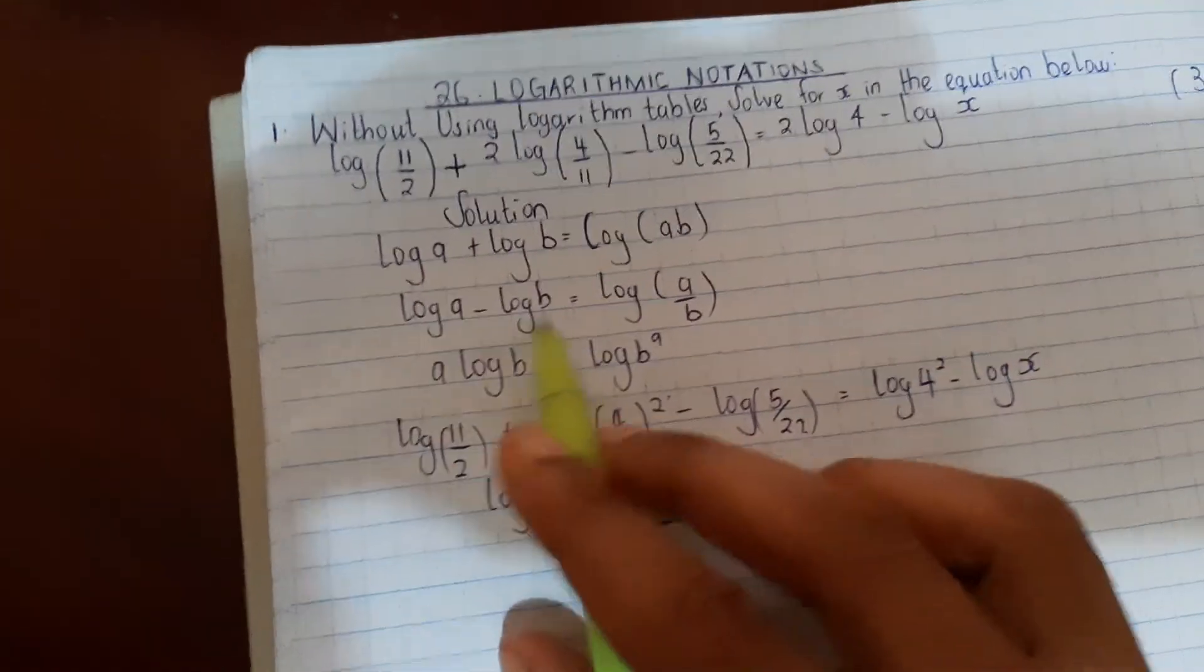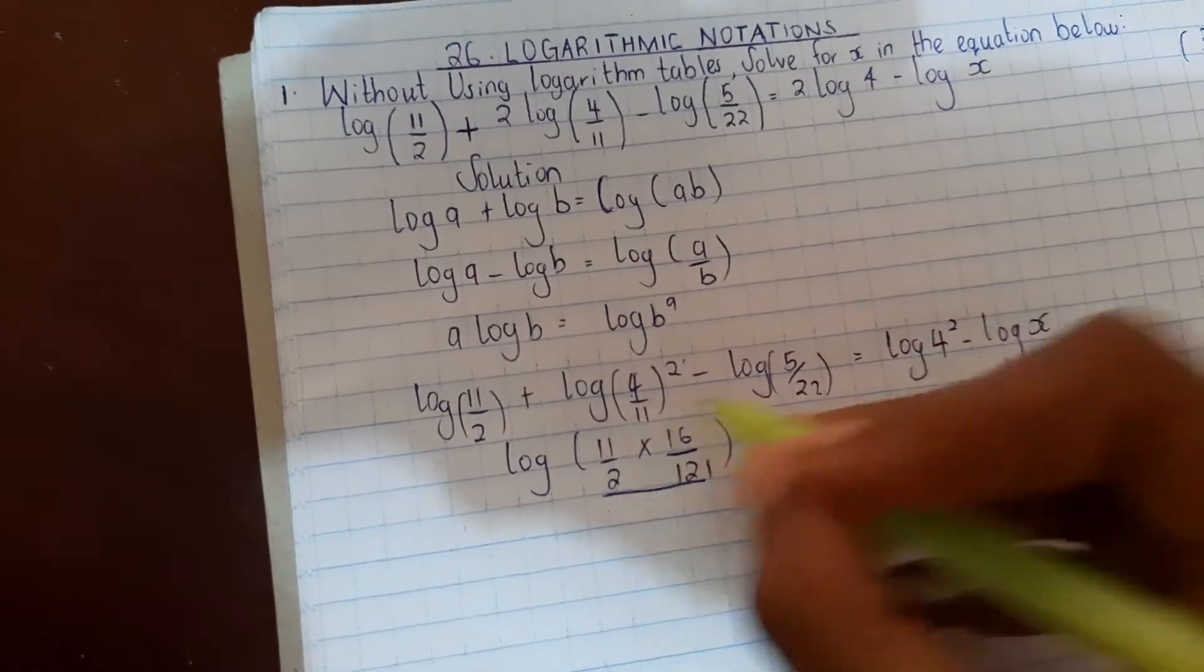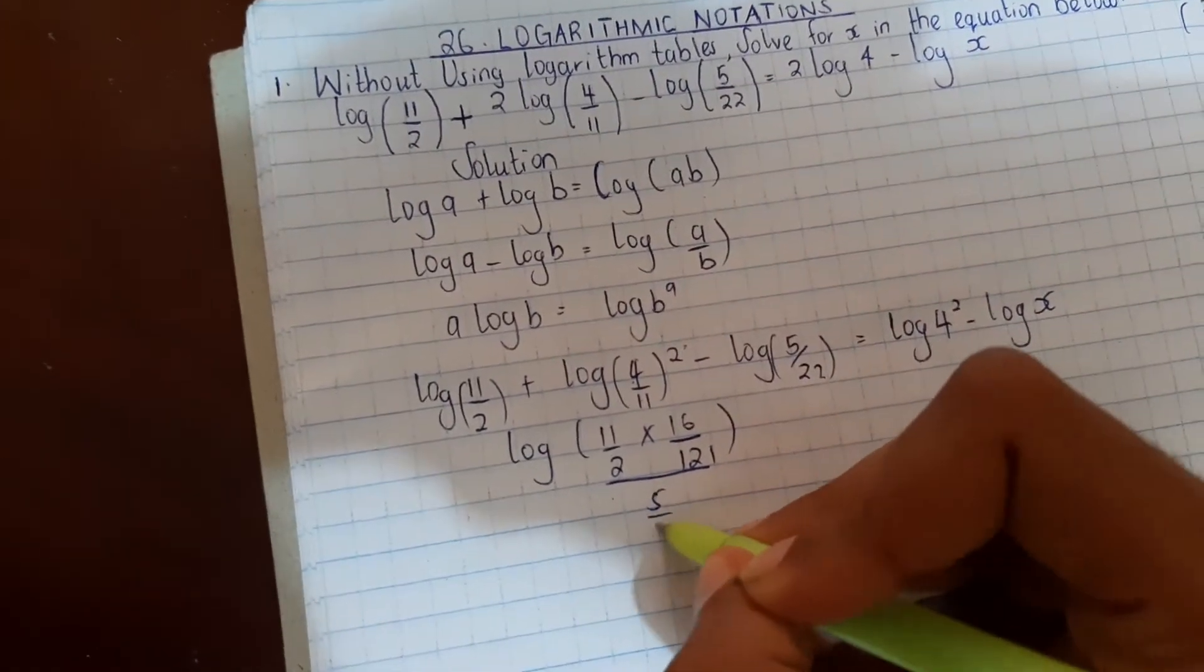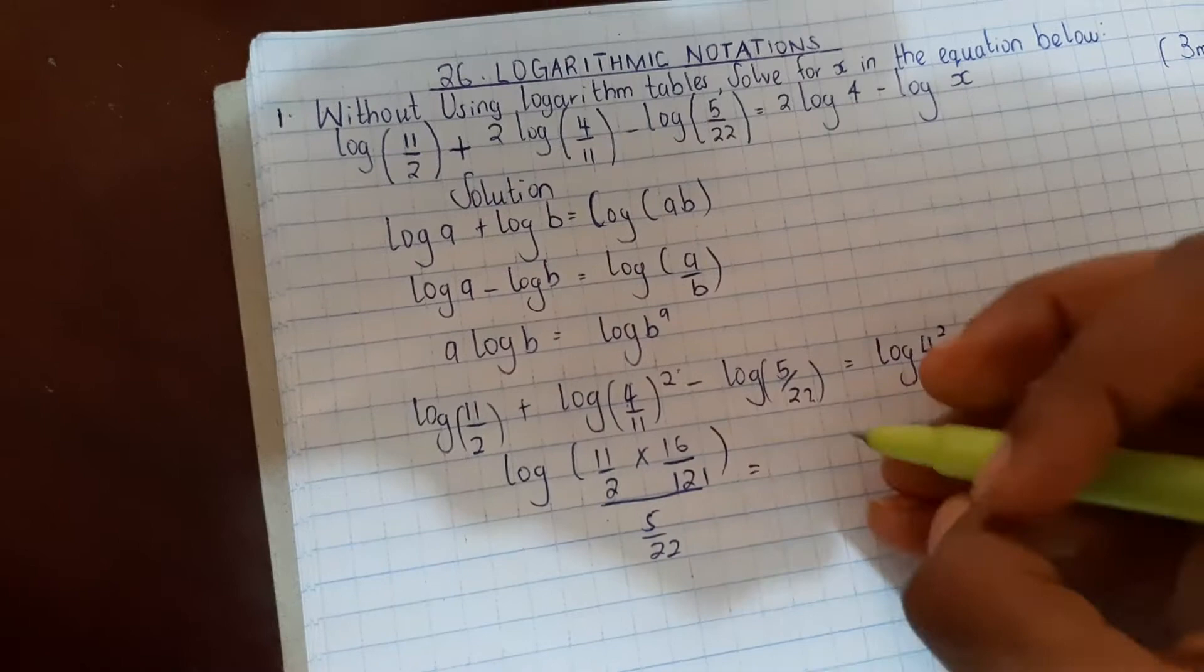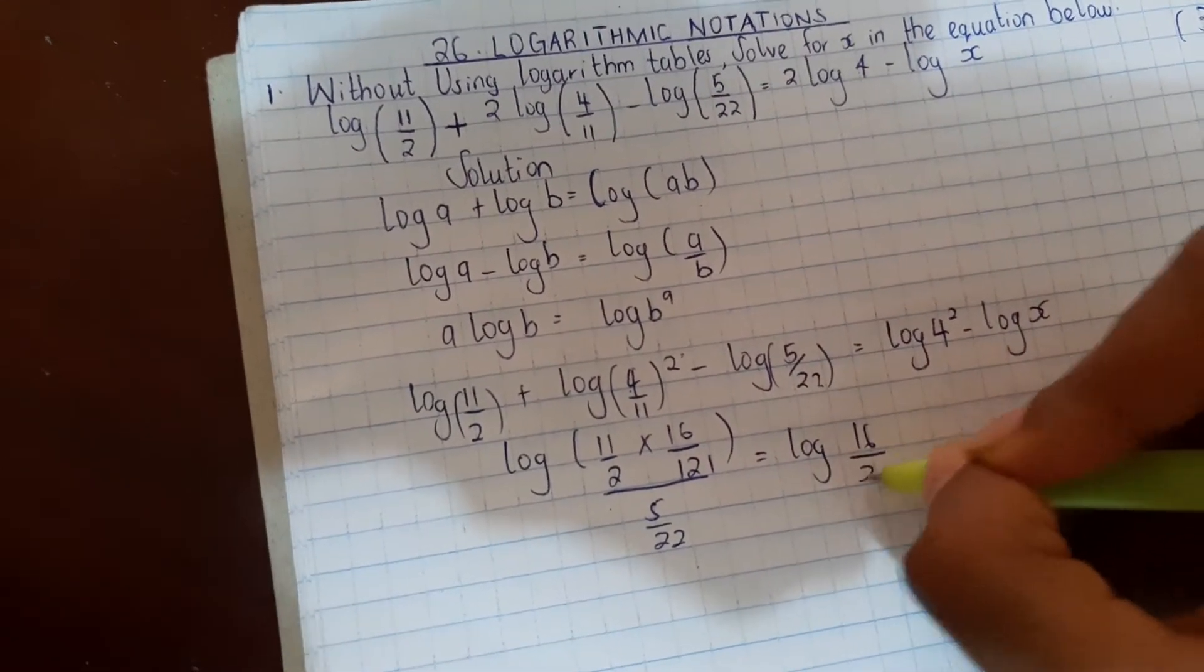Then using log a minus log b equals log a over b, we have over 5/22 equals log 4 squared which is 16 divided by x.